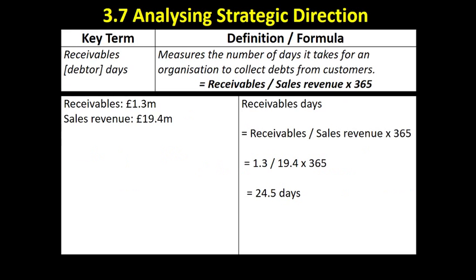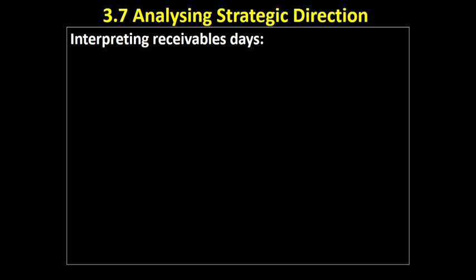A very simple example: if you've got receivables of £1.3 million on your balance sheet and a sales revenue of £19.4 million, you divide receivables by sales revenue and multiply by 365. That tells us this company is taking approximately 24.5 days — we'd round it up to 25 days — to collect its debts.